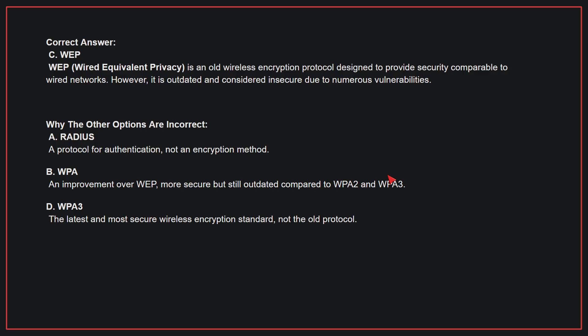Why the other options are incorrect: A, RADIUS — this is a protocol for authentication, not an encryption protocol. B, WPA — this is an improvement over WEP and more secure, but still outdated compared to WPA2 and WPA3. D, WPA3 — this is the latest and most secure wireless encryption standard, not the old protocol. Therefore, the correct answer is C.